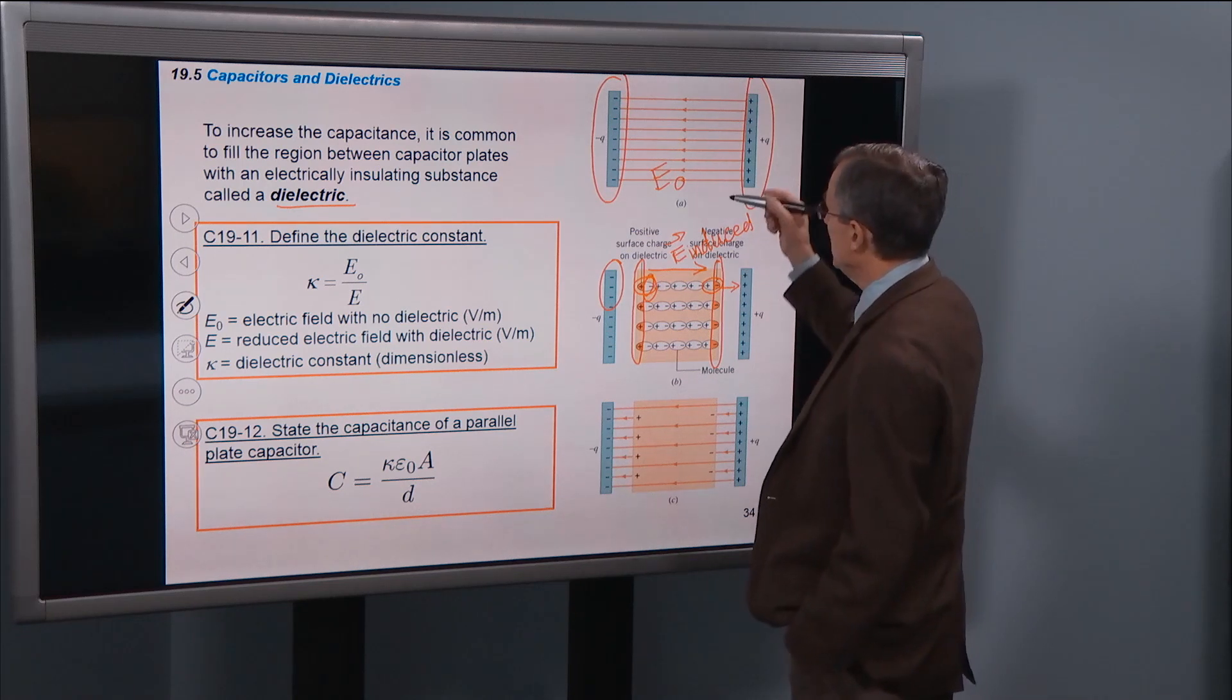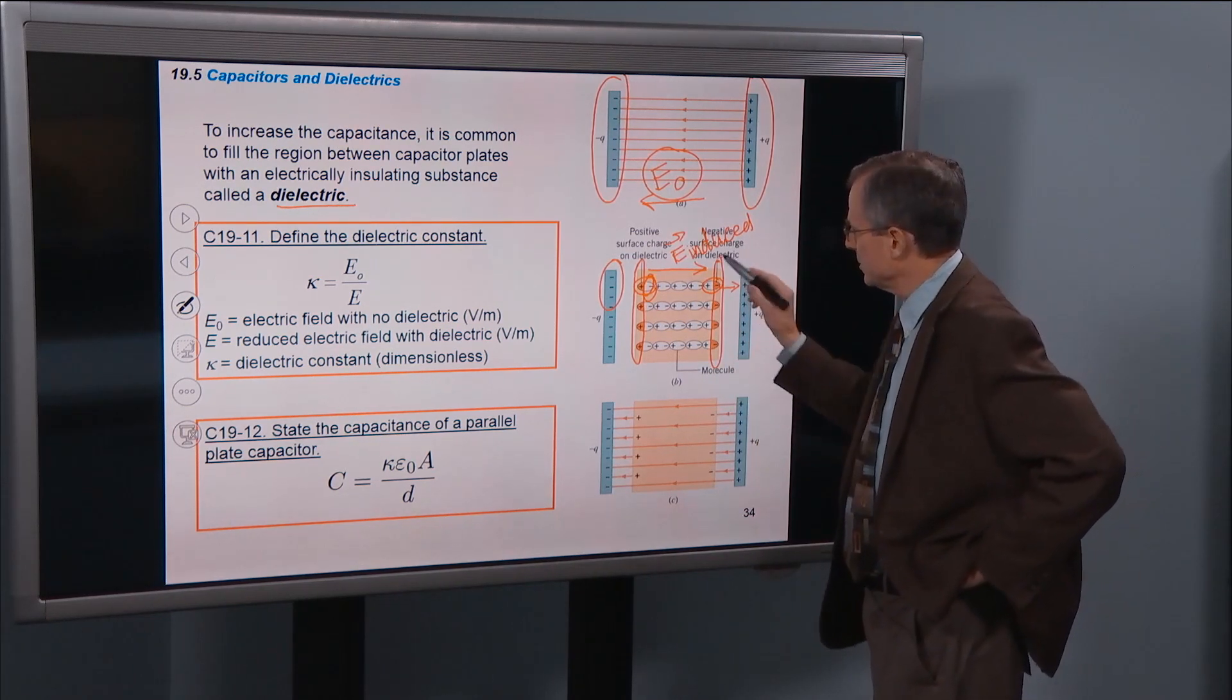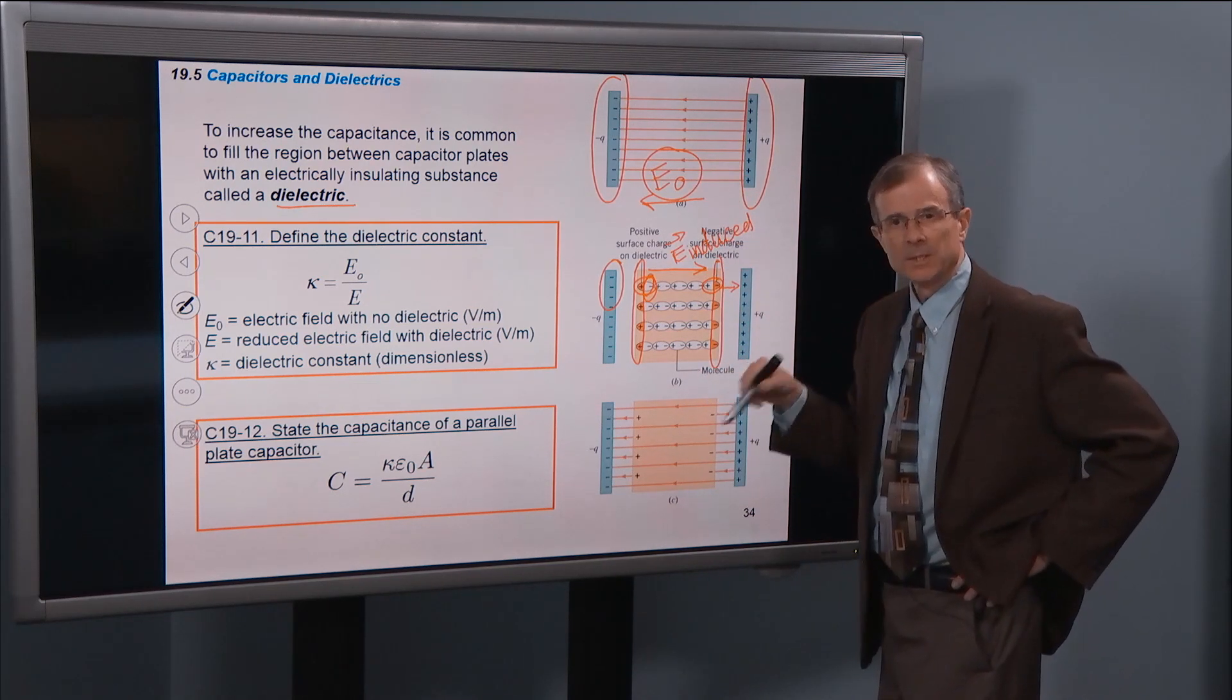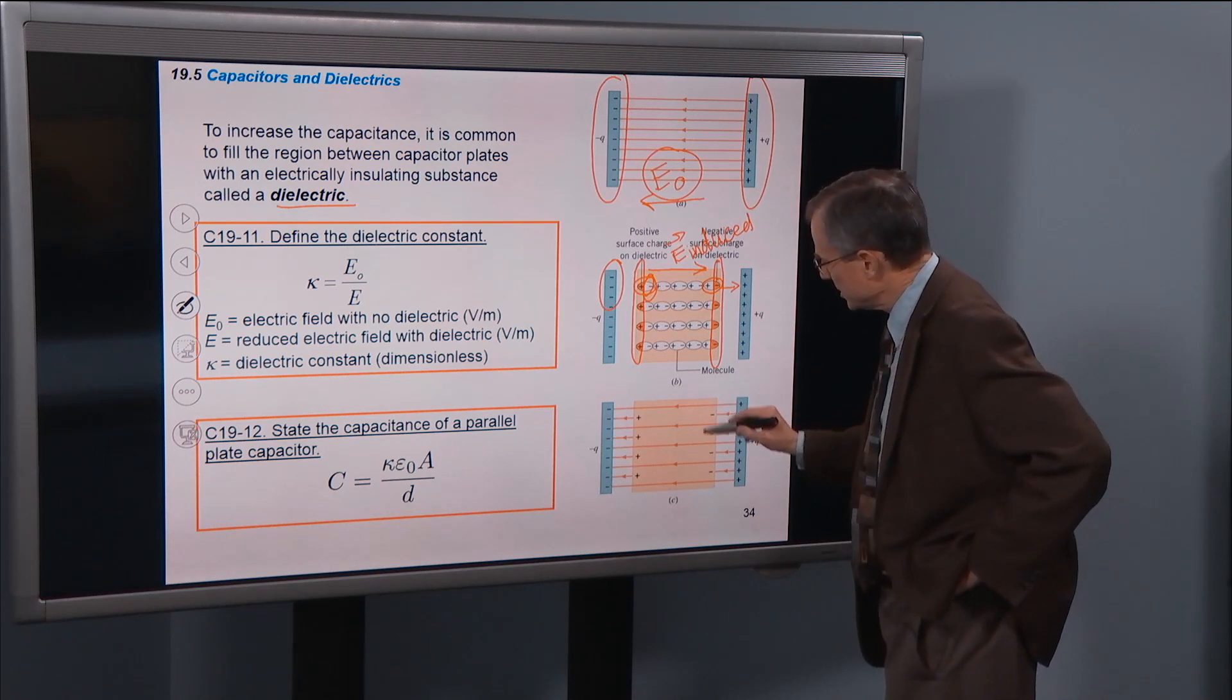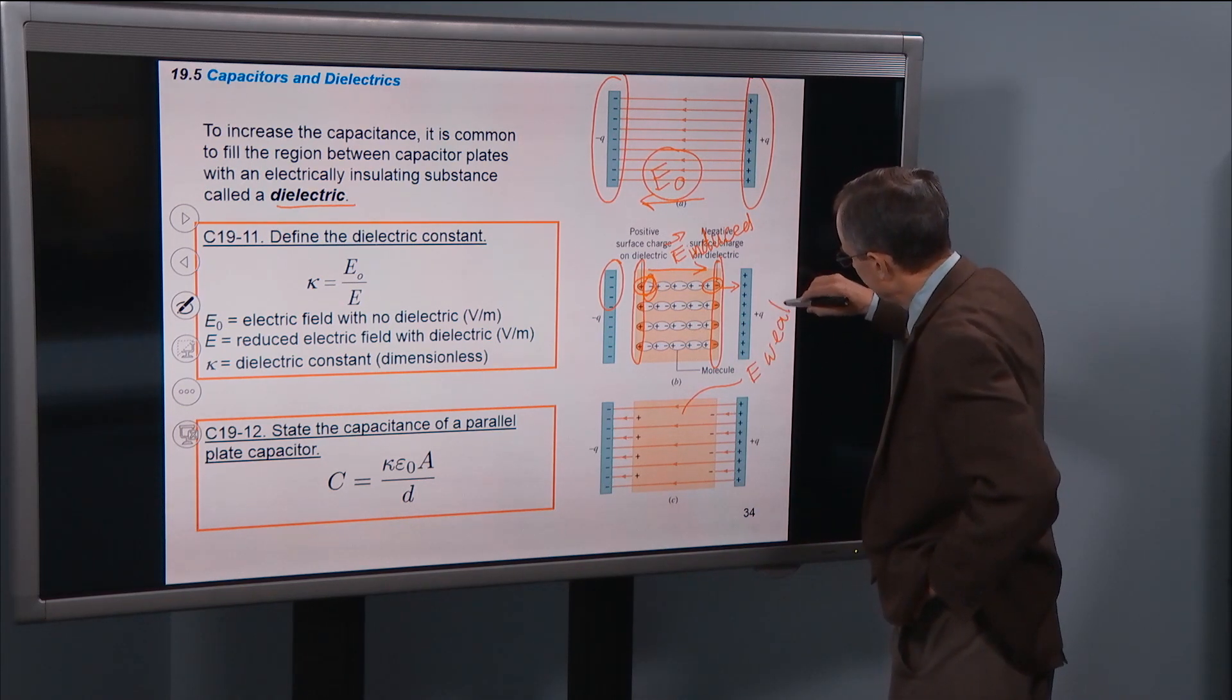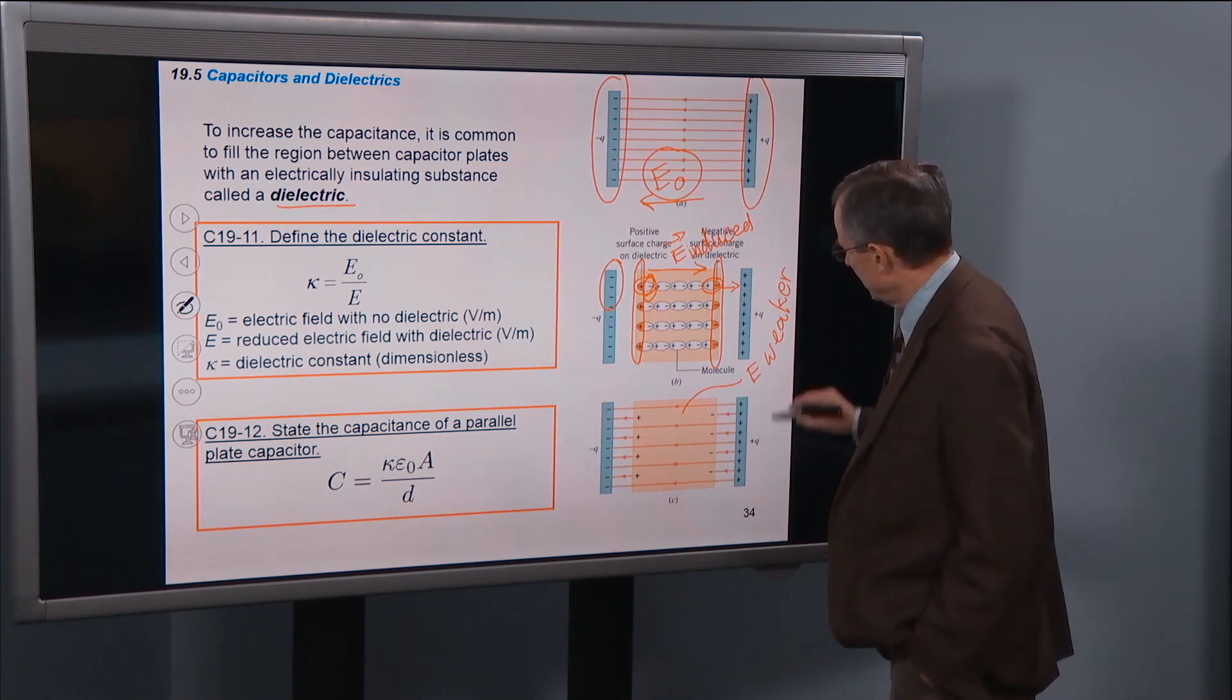Whereas the applied electric field, this E0 right here, is to the left. What that does, what this induced electric field, when added to the applied electric field, is that it cancels out some of the electric field in the interior of that dielectric. So this electric field here in the interior is weaker than it would have been outside. And we call it E.